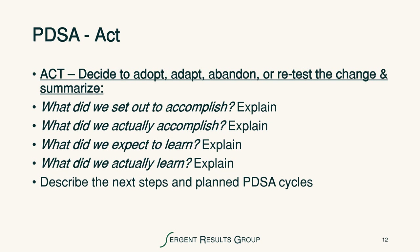In the act phase, it's our opportunity to decide — after we've gone through the plan, the do, and the study phases and gathered data about what we discovered from testing our theory — we decide to act by choosing to either adopt, adapt, abandon, or retest the change. We summarize it by answering these questions: What did we set out to accomplish? What did we actually accomplish? What did we expect to learn? And what did we actually learn? We then get an opportunity to describe the next steps and the planned PDSA cycles for the future.